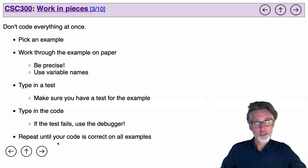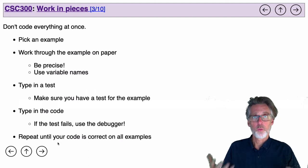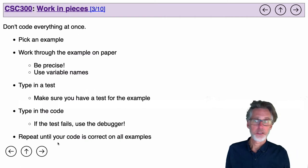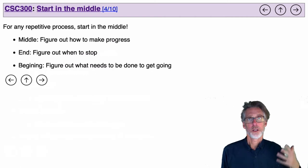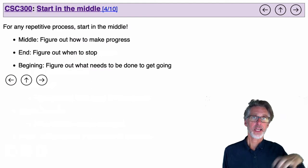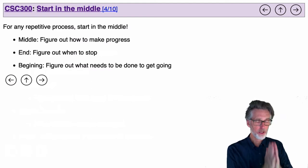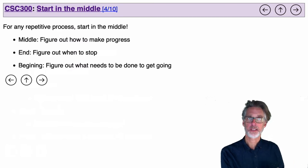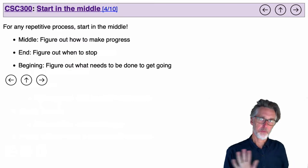So what you're going to do is pick each example, work through it. And once you've got code that covers all of your examples, then you're done. You start writing any repetitive task, working in the middle. Assume that you're halfway through your problem and you just need to make one step of progress. After you've done the middle, you can worry about how to end and how to begin the process.